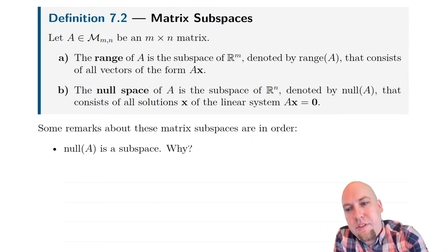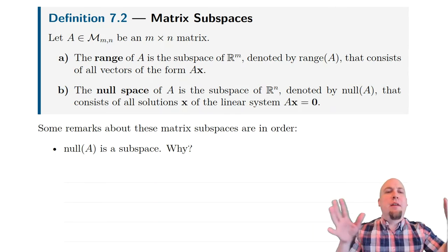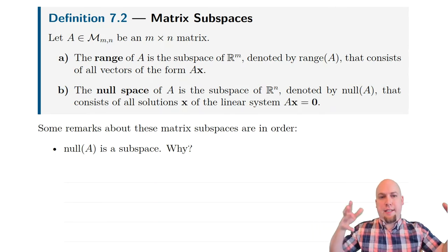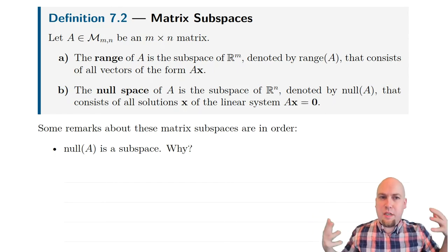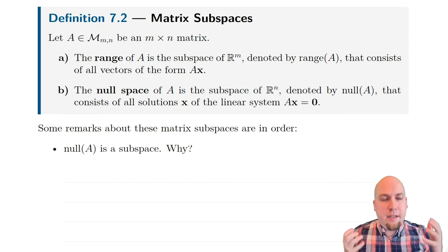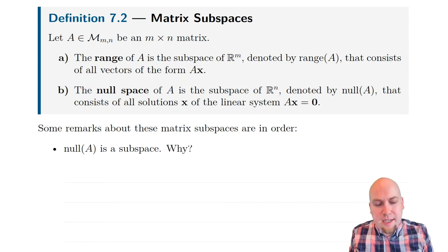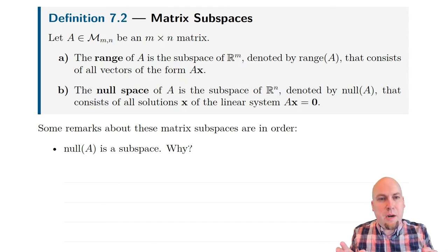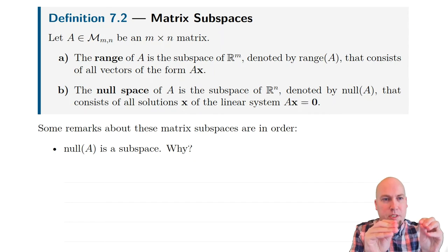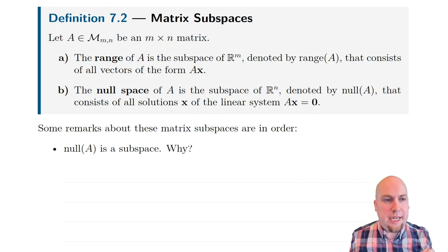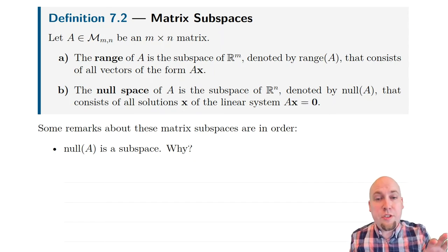Both of these sets are collections of vectors, but it's not obvious at first glance that they are subspaces. Remember, to be a subspace the set has to be closed under vector addition and closed under scalar multiplication. So let's show that these two sets actually have those two properties.